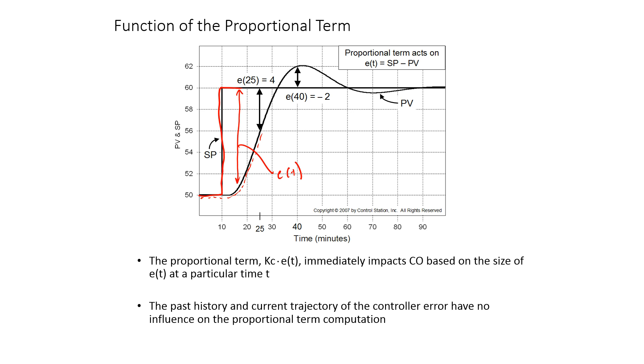With that proportional term, that's going to immediately impact the controller output. You're going to see an immediate response as soon as that set point is changed. The integral actually integrates the error, then it's going to take a while for it to respond, and it'll have the effect of eliminating offset.